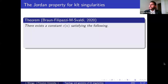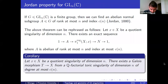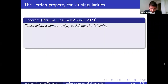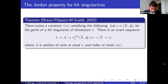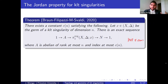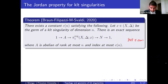Now let's go to the first main theorem: the Jordan property for KLT singularities. We want to generalize this exact sequence from quotient singularities to all possible KLT singularities. There exists a constant C_N depending only on N such that for the germ of a KLT singularity of dimension N, there exists an exact sequence where A is abelian of rank at most N and index at most C_N. Philosophically, this says that KLT singularities and quotient singularities are almost the same from some topological perspective — at least from π₁, they're really similar.